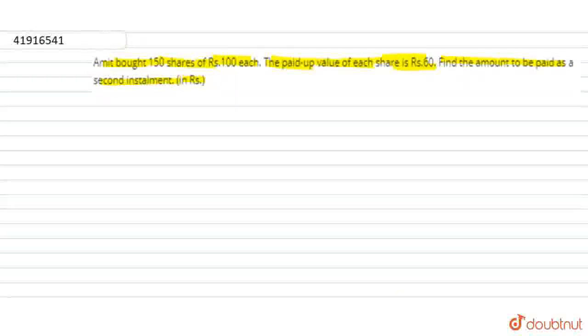Now what do we have to do with this question? Amit bought 150 shares of Rs. 100 each. The paid up value of the shares is equal to Rs. 60. So what do we have to find? The amount to be paid as the second installment. So first of all, we have number of shares and face value.